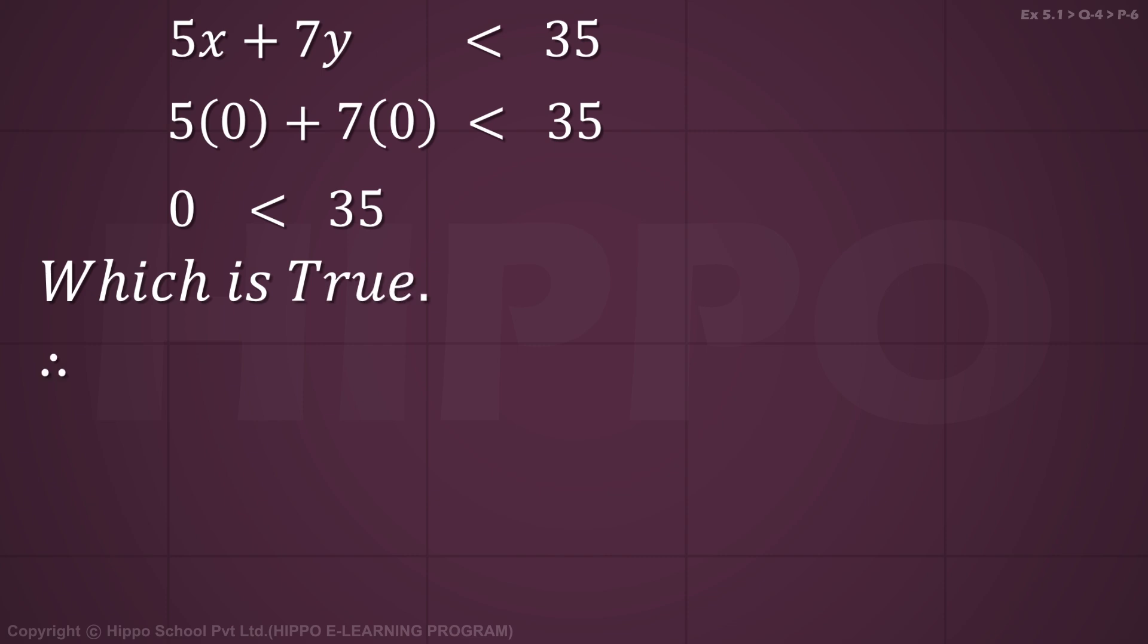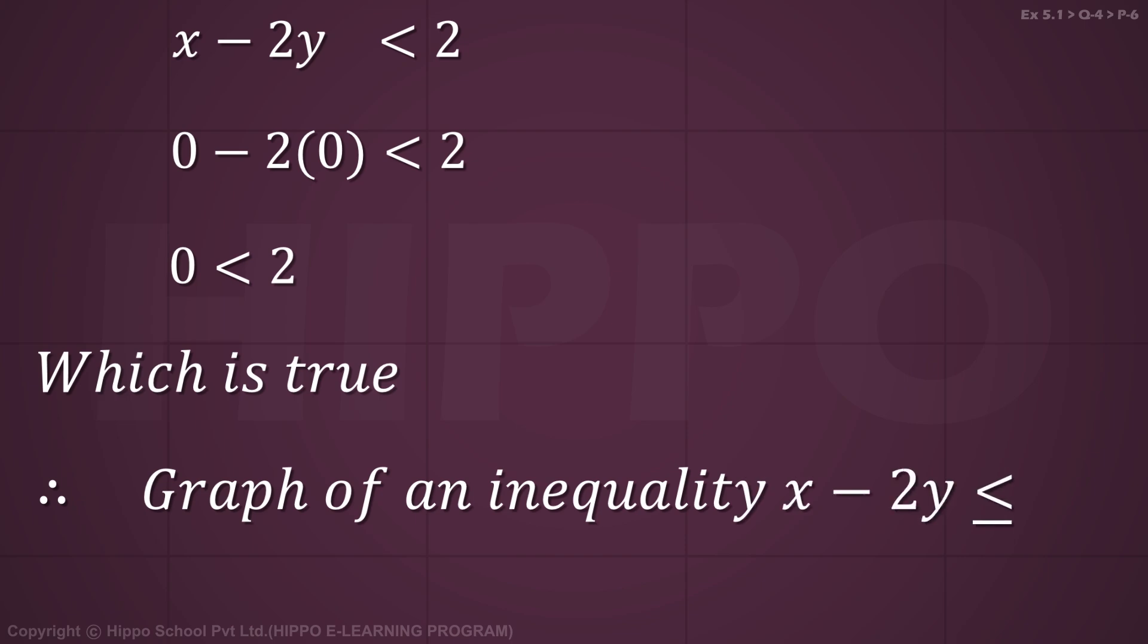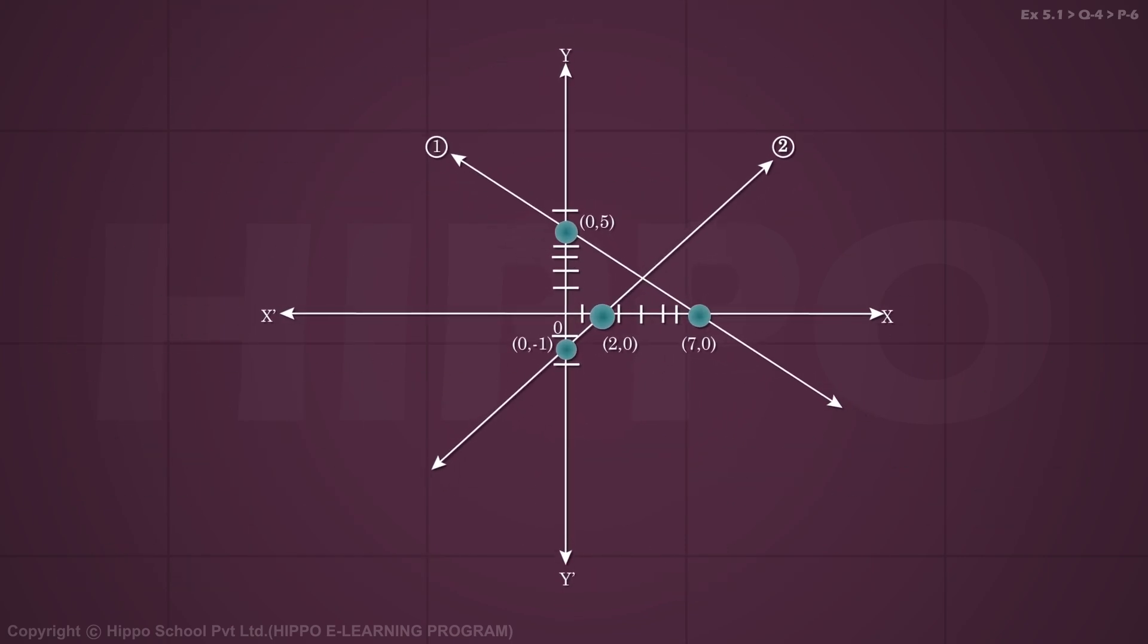So the graph of the inequality 5x plus 7y less than or equal to 35 will be towards the origin side. Similarly, the graph of the inequality x minus 2y less than or equal to 2 will be towards the origin side.